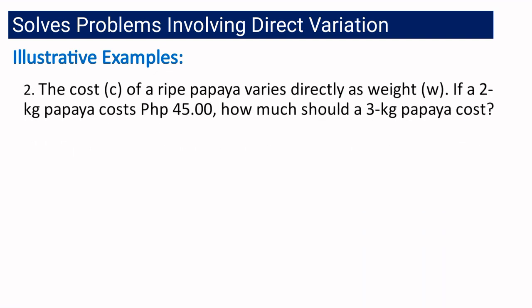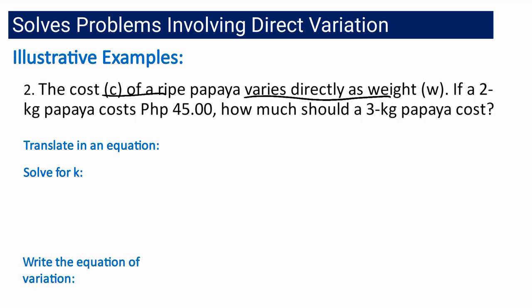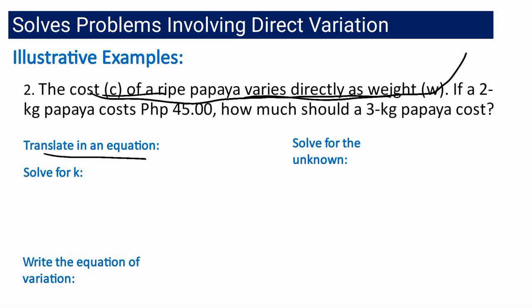Let us now discuss the second example — a real-life word problem. The cost of papaya varies directly as its weight. If a 2kg papaya costs 45 pesos, how much should a 3kg papaya cost? It is true that cost varies directly as weight — the bigger the papaya, the heavier it is, meaning the more you pay. To solve this, we follow the same steps. Translating: the cost varies directly as the weight, so c equals kw.